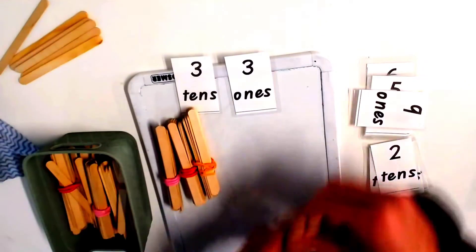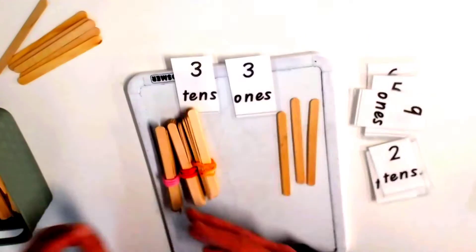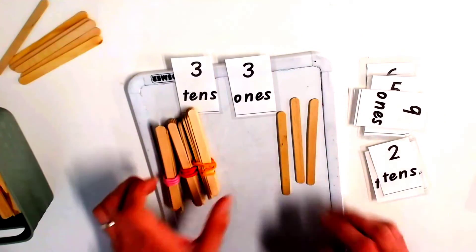I create the tens first. Three bundles of ten makes the three tens and three ones. Three tens and three ones.